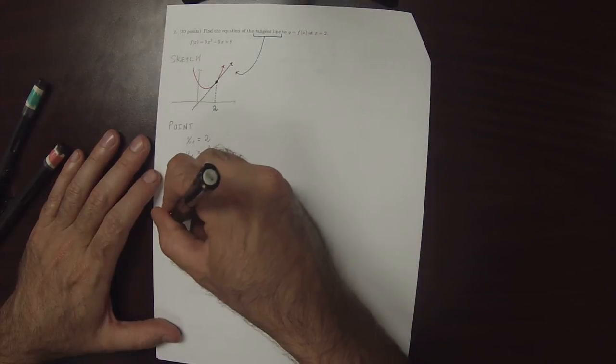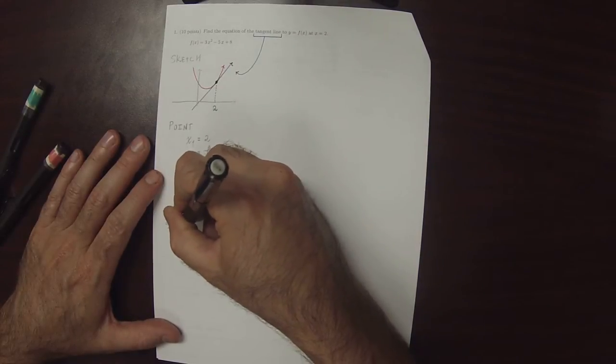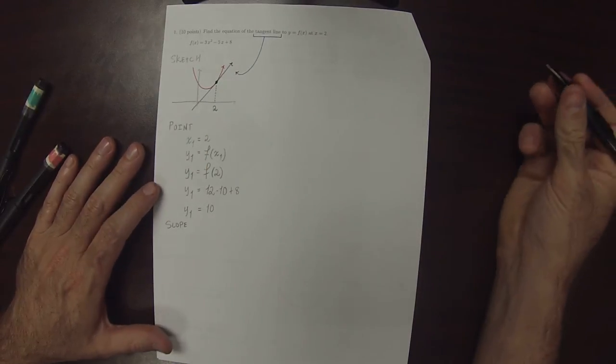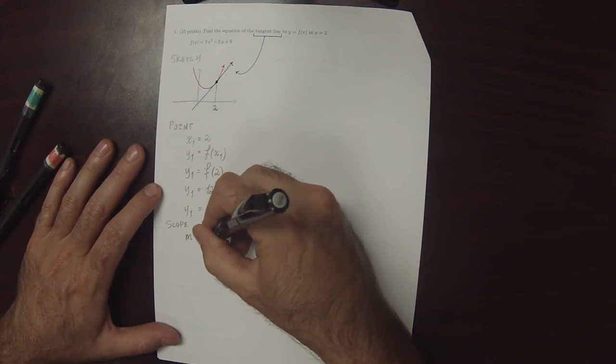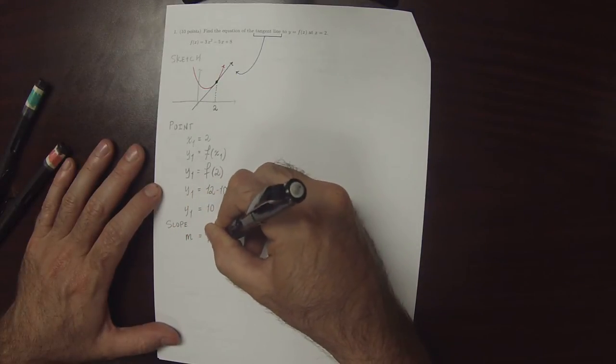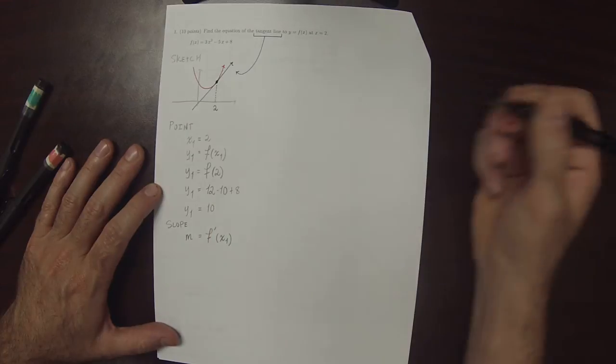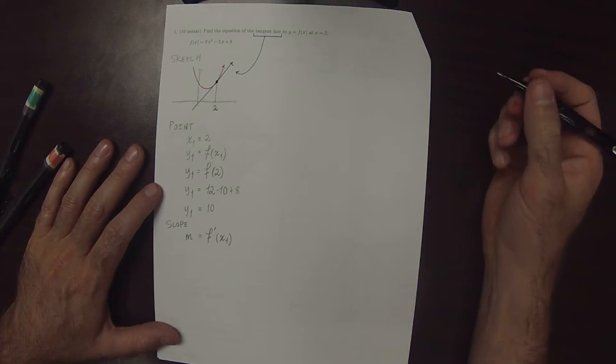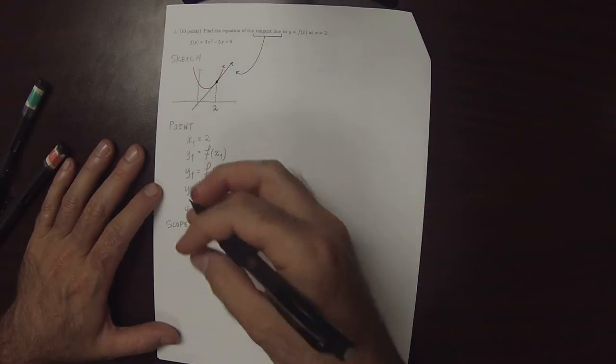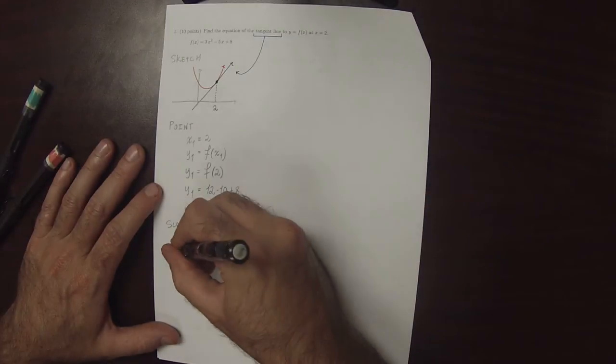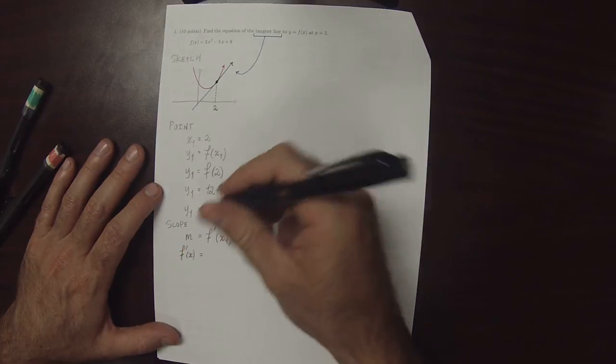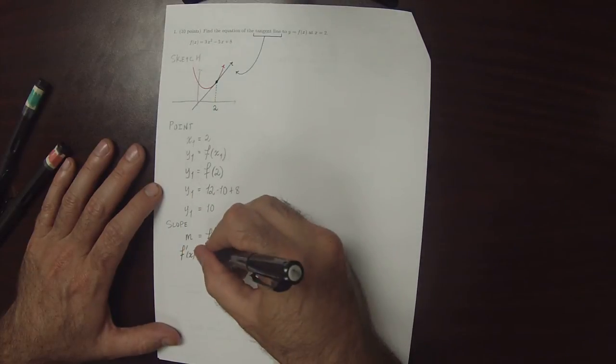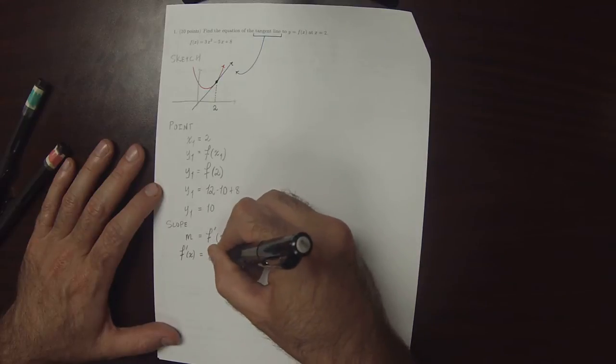The slope will be m equal to the derivative evaluated at x1. So, in order to evaluate this, we'll need the derivative. So, let's compute the derivative. The derivative is 6x minus 5.